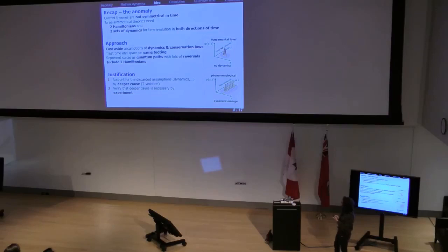And the justification for doing this, for throwing away these fundamental assumptions, is that we need to account for dynamics from this deeper course, from T-violation, and we need an experiment to verify it. I'm not interested in just developing a theory that's just a nice way of looking at things.